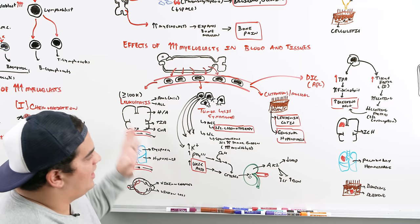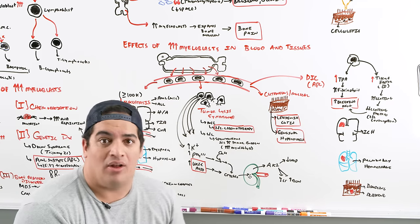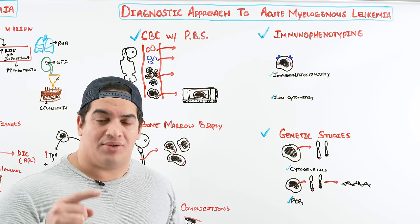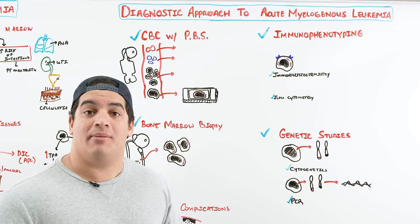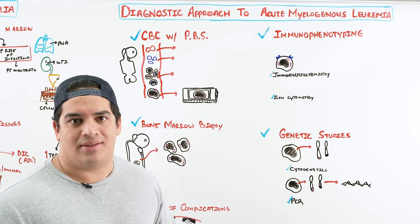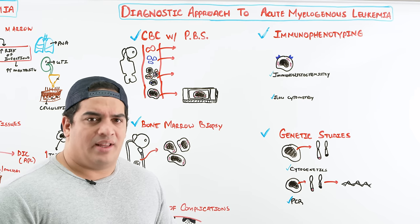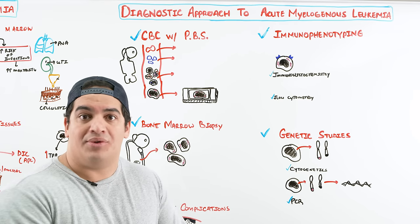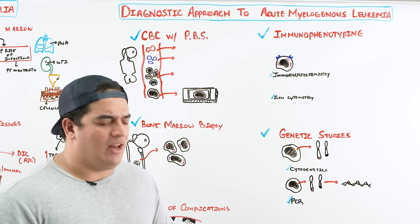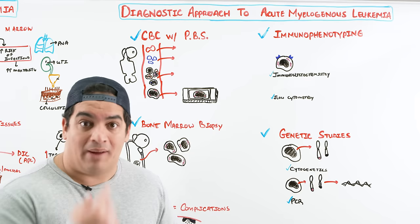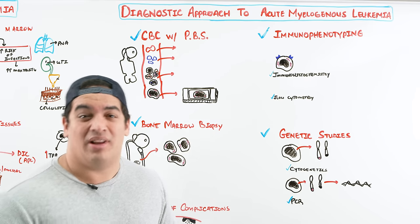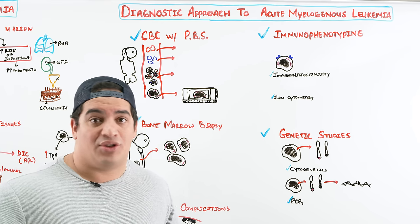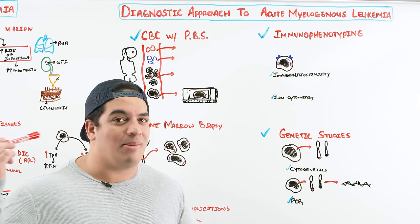Now that we have a strong suspicion of AML — based on history of chemoradiation, MDS, CML, or Down syndrome, plus features like fatigue, pallor, bone pain, bruising, bleeding, infections, leukemia cutis, gingival hyperplasia, leukostasis, DIC, or tumor lysis syndrome — we need to work them up. The first test is a CBC with peripheral blood smear. This is a good screening test that confirms findings from our pathophysiology.